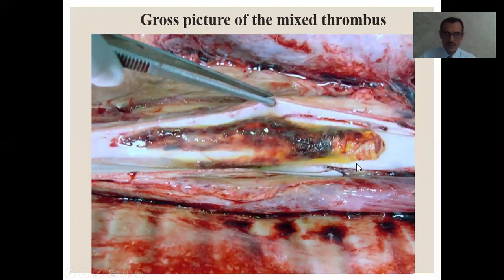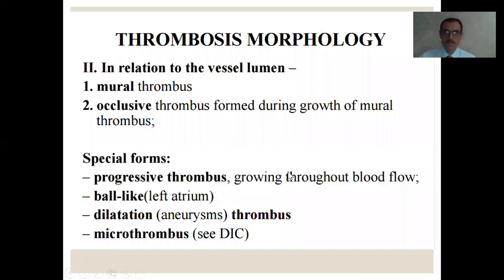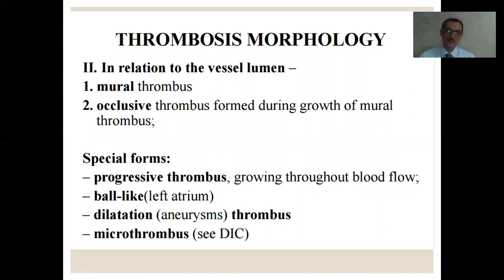Here is the gross picture of the mixed thrombus with head, body, and tail. In relation to the vessel lumen, there are two types of thrombus: the mural thrombus — directly attached to the vessel wall but not completely occluding the lumen — and the occlusive thrombus — that forms during progression of the mural thrombus completely occluding the vessel lumen.